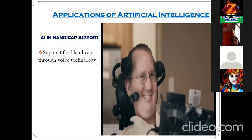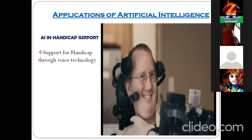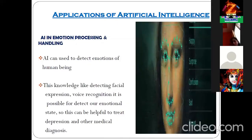Consider a person who has lost his hands in an accident — can he operate a mobile? No. In that case, Google Assistant can be very useful. He can operate the mobile through voice technology. That is another very good example of AI for handicapped person support.